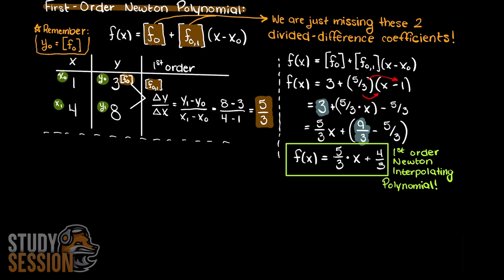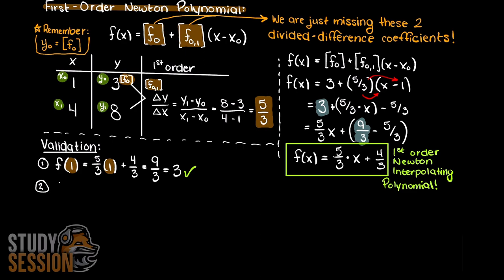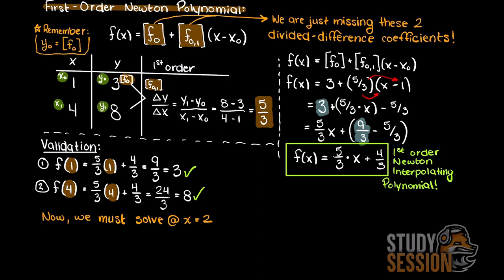Applying this newly found coefficient, and remembering that the divided difference of 0 is simply y0, we can go ahead and solve and simplify for our Newton interpolating polynomial, which is 5 over 3x plus 4 over 3. You can now take a minute and try to validate your answer — we know that all of our x points must give our y points as interpolating polynomials must pass through all supplied data points. We can see that we have done it correctly. Lastly, we are asked to solve for the output for an input of 2. This results in an output of 4.66 repeating, and that is the answer to the question we were initially asked.